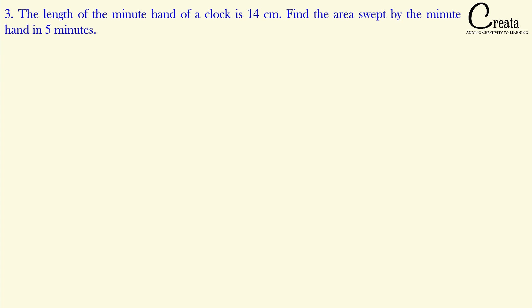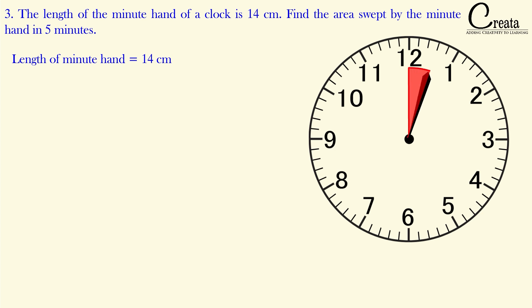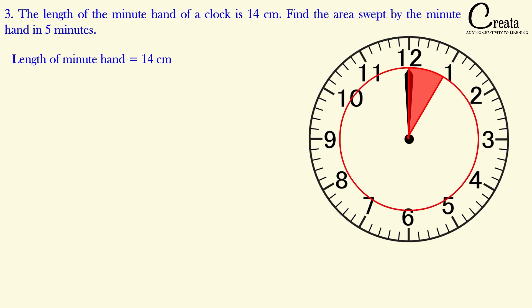Let's move to question number 3. The length of the minute hand of a clock is 14 cm. Find the area swept by the minute hand in 5 minutes. This question is talking about a clock with a minute hand of length 14 cm. We can draw a circle with the same center as the clock with radius equal to the length of the minute hand — 14 cm. The shaded region swept by the minute hand in 5 minutes is the area we have to find.